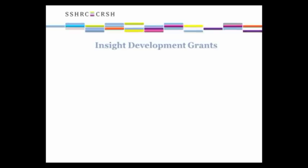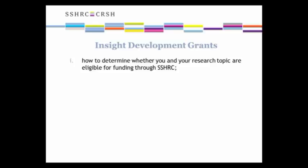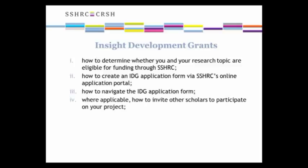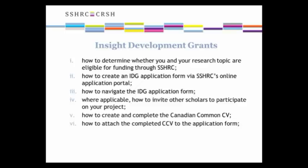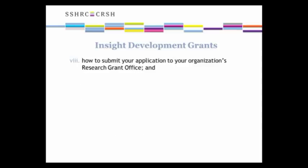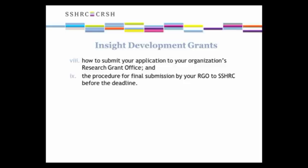Specifically, we will look at how to determine whether you and your research topic are eligible for funding through SSHRC; how to create an IDG application form via SSHRC's online application portal; how to navigate the IDG application form; how to invite other scholars to participate on your project; how to create and complete the Canadian Common CV; how to attach the completed CCV to the application form; how to complete and validate your IDG form to prepare it for submission; how to submit your application to your organization's research grant office; and the procedure for final submission by your RGO to SSHRC before the deadline.